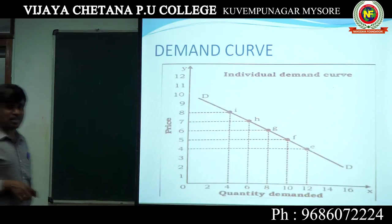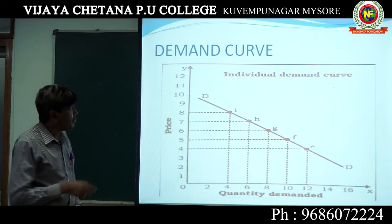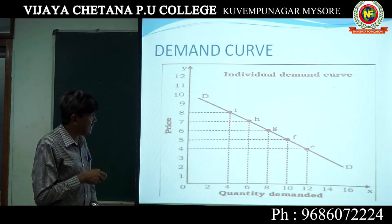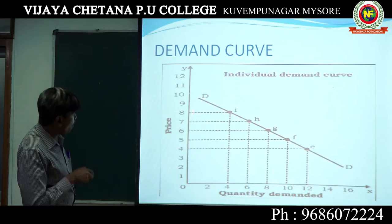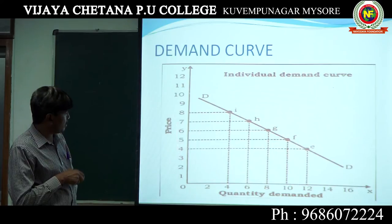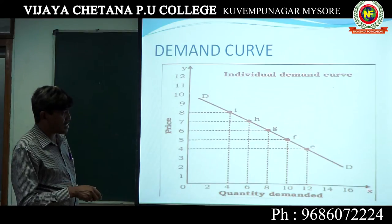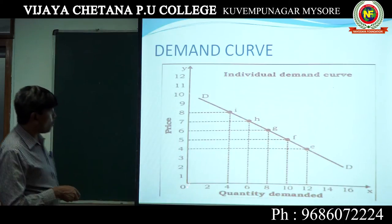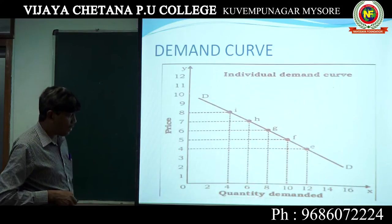Demand curve. If demand schedule is represented with a diagram, we call it a demand curve. On the OY axis we measure the price, and on the OX axis we measure quantity demanded. See here — if price increases from 4 to 5, 5 to 6, 6 to 7, 7 to 8, then quantity demanded decreases.